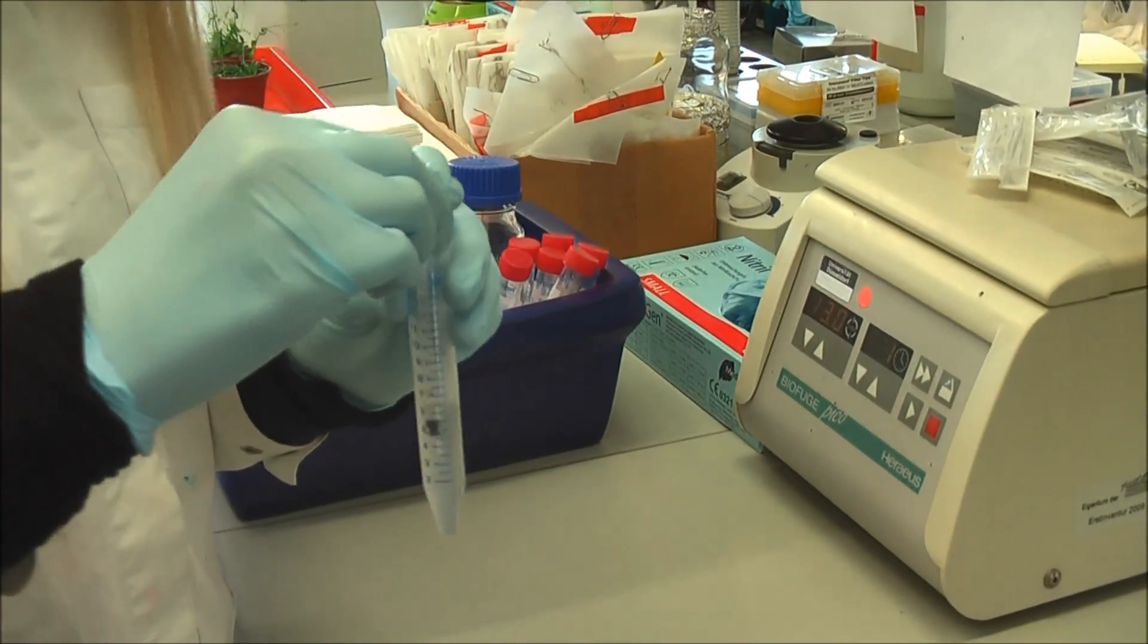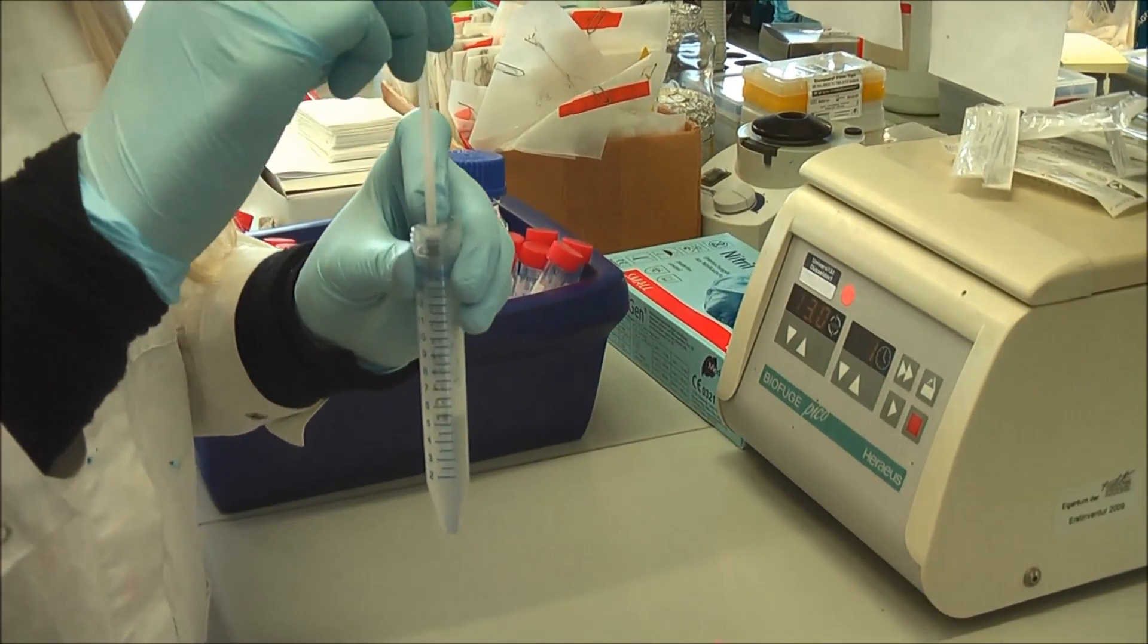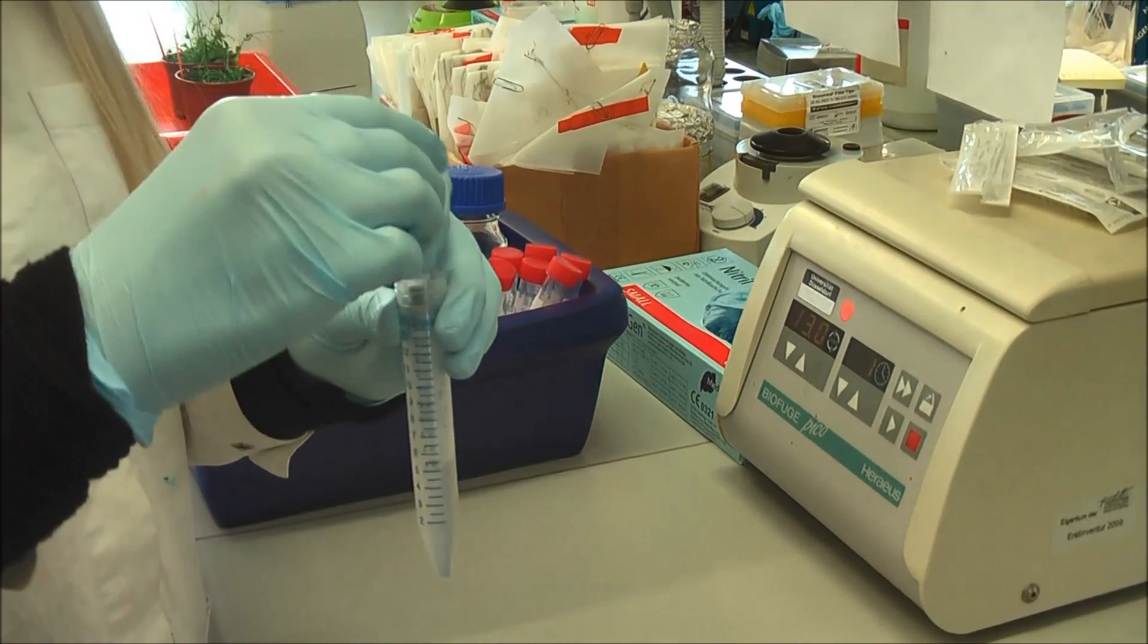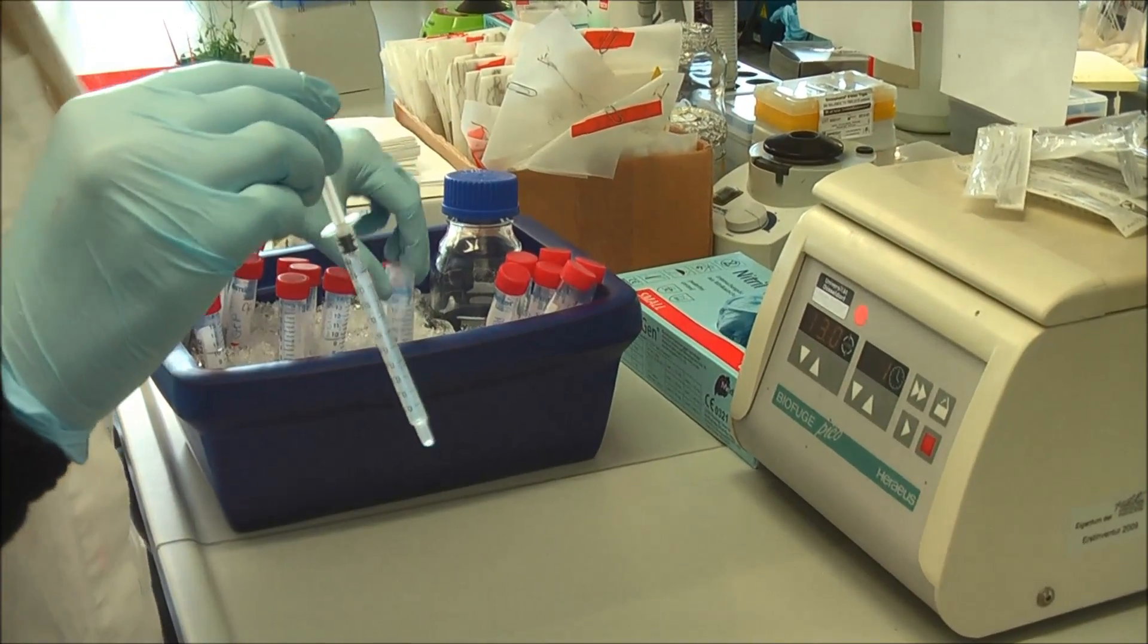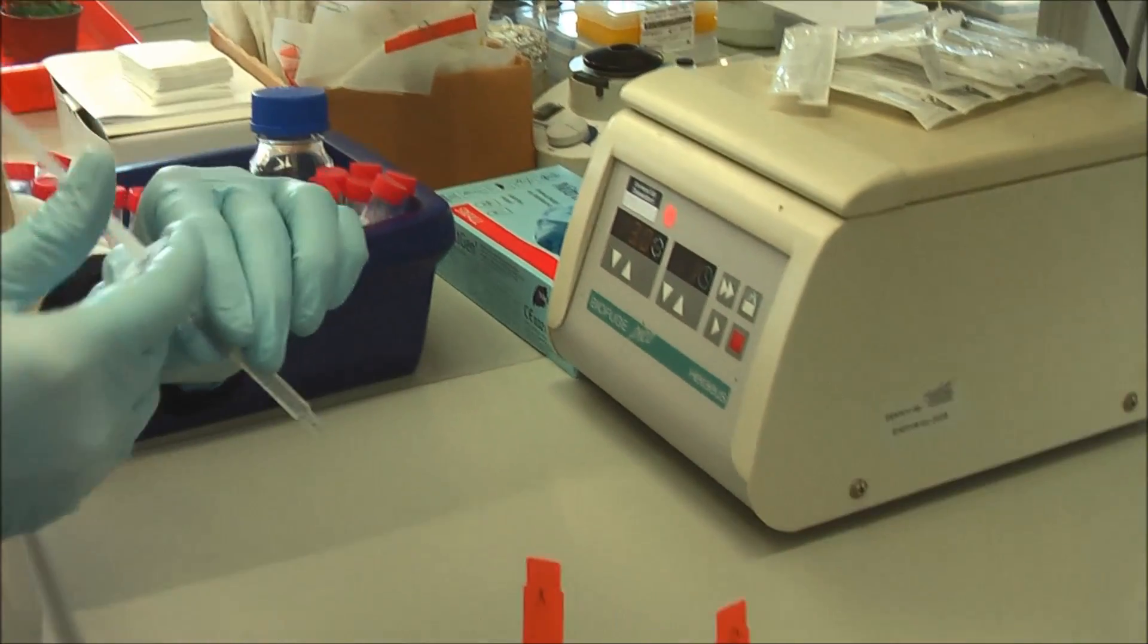Therefore, we inject agrobacteria into leaves of a plant, for example tobacco. Here the DNA is integrated and the tobacco plant can produce a protein from the DNA code.